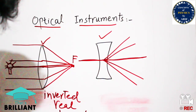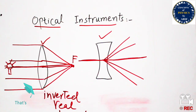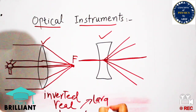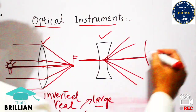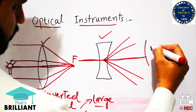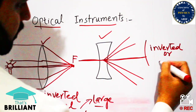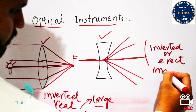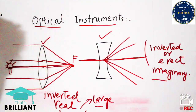Based on these properties, we use to design optical instruments in order to understand the application of these instruments according to their properties. The concave lens has characteristics where an inverted, erect, or imaginary image can be formed. These are basic properties.